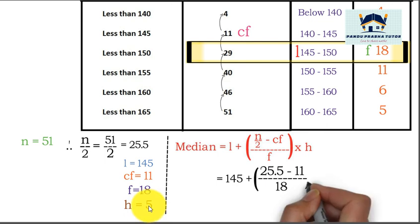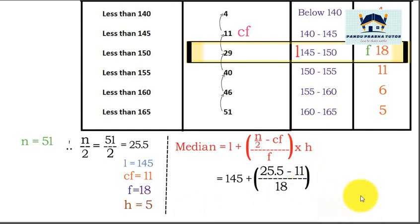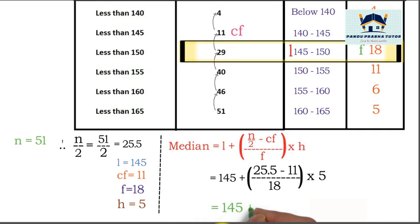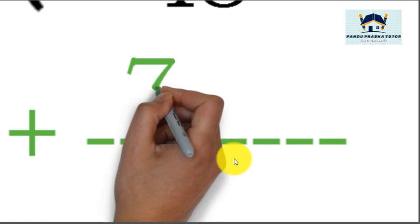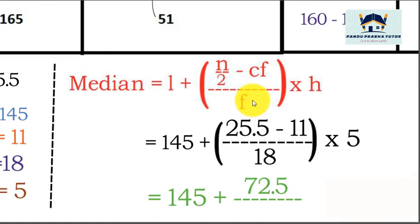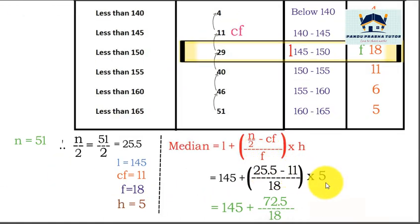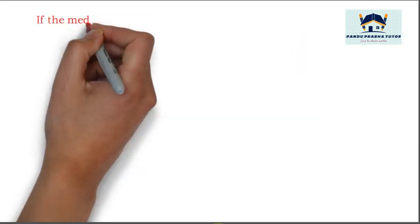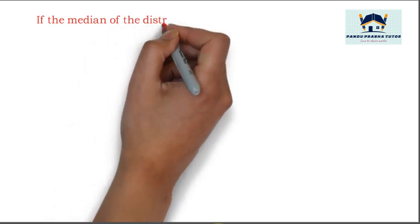Simplifying: 145 + [14.5 / 18] × 5 = 145 + 72.5 / 18, which gives 145 + 4.03, approximately equal to 149.03. This is the median. Now we will take another question.